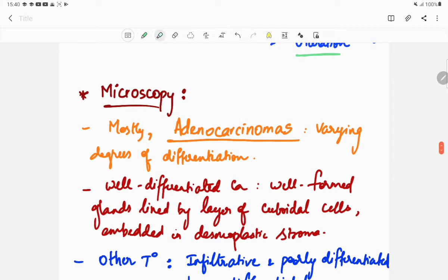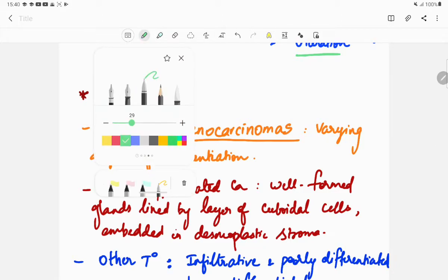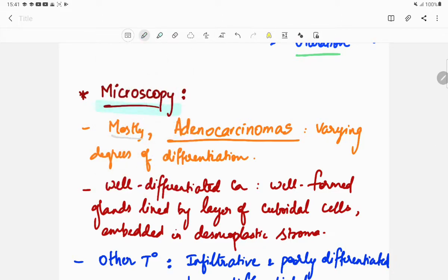Next, coming to the microscopy: In microscopy, mostly gallbladder carcinomas are of adenocarcinoma variety, showing varying degrees of differentiation.